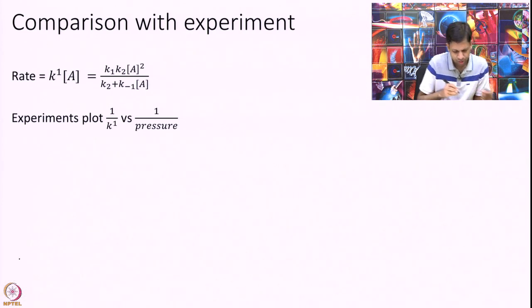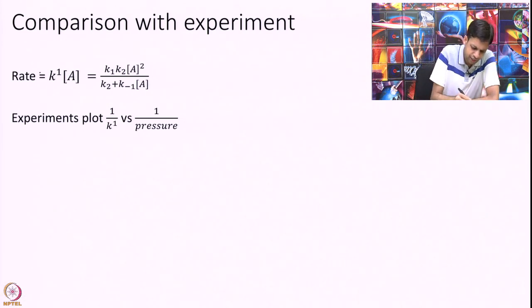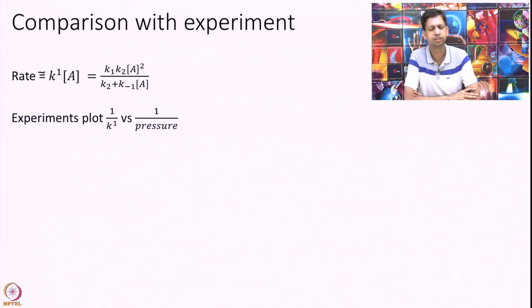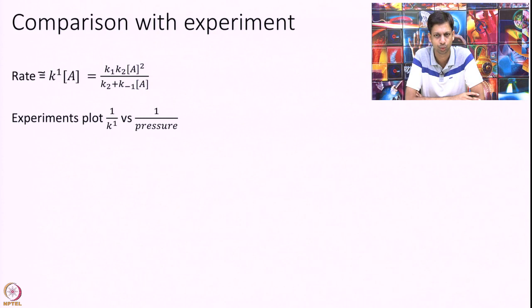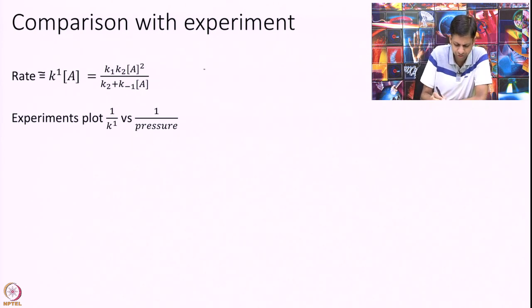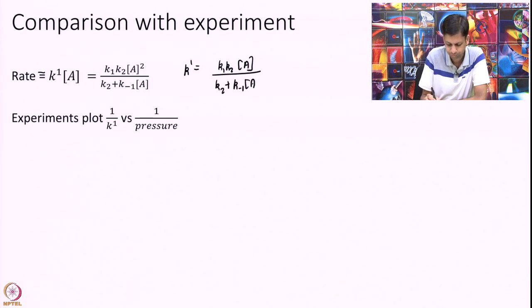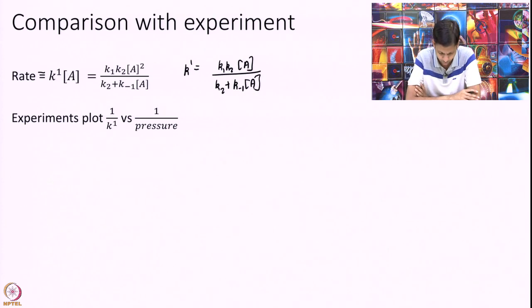Finally, I can express rate as some K into concentration of A. I can calculate this K1 as K1 K2 A over K2 plus K minus 1 into A. I have divided by capital A on both sides. Clearly this K1 is not independent of concentration. It is not a number at a given temperature, it depends on concentration of A. Clearly showing that A going to B is not elementary in this model.